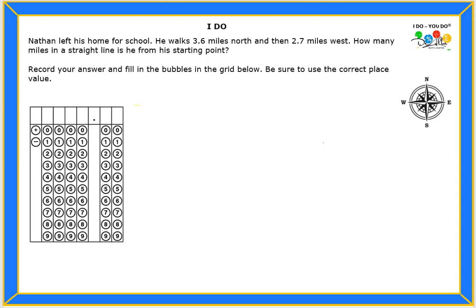Record your answer and fill in the bubbles in the grid below. Be sure to use the correct place value. So what is it that I'm looking for? We want to find out how many miles is Nathan away from his starting point. So he did some kind of movements, right? It says that he actually walked 3.6 miles north, and then from there he went 2.7 miles west. So the question now is, how far away is he now from his starting point?